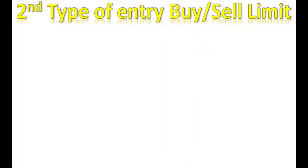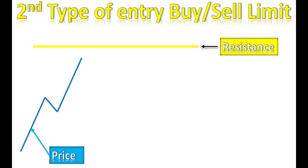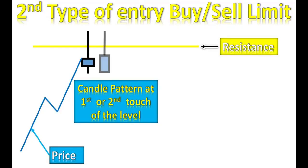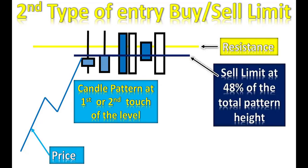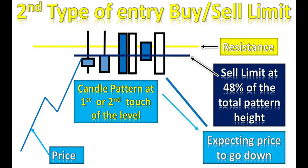The second type of entry is a buy or sell limit. Same scenario — resistance, price goes up and makes a pattern. After that, you place a buy or sell limit at 48% of the total pattern height. This gives you a better entry point and a shorter stop loss, so you can get more reward. With this specific aggressive style of entry, the doji is not allowed.